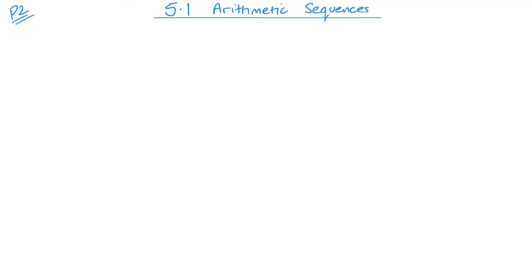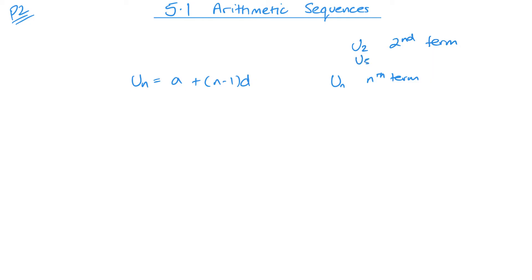If it's not a constant value between each term then it's not arithmetic. At A-level we start looking at a different formula, and it looks like this. U is for the term, so UN means the nth term. U2 would be the second term, U5 would be the fifth term, and so on. The first term is always A — A stands for the first term, which is kind of like U1. D is for the common difference, which is what the sequence is going up or down in. It would be positive for an increasing sequence and negative for a decreasing sequence.